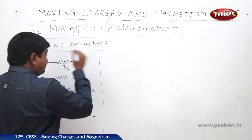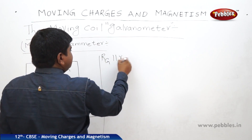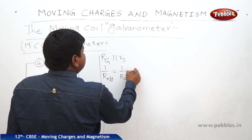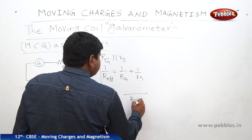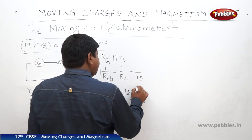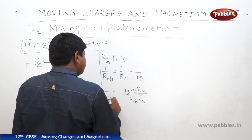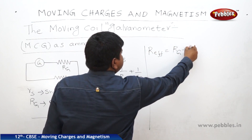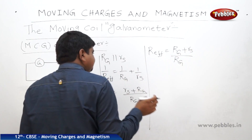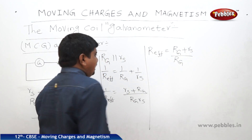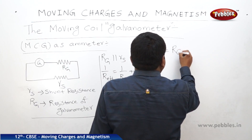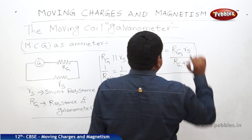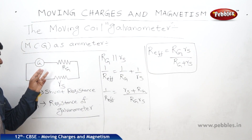When RG and RS are connected in parallel, the effective resistance is given by: 1/R_effective = 1/RG + 1/RS. Taking LCM as RG·RS, we get R_effective = RG·RS / (RG + RS). This is the effective resistance for the galvanometer working as an ammeter.